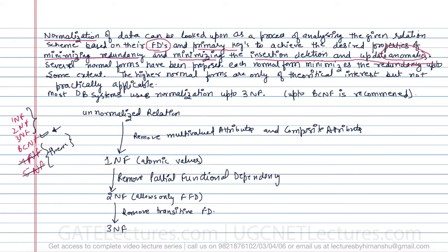Most database systems use normalization up to 3NF. If a relation is in un-normalized form, by removing all multi-valued attributes and composite attributes, the relation comes into 1NF, where every domain of every attribute is atomic. A relation is in 1NF if the domain of each attribute contains only atomic values, and each attribute contains only a single value from that domain — it will not contain any multi-valued attribute.